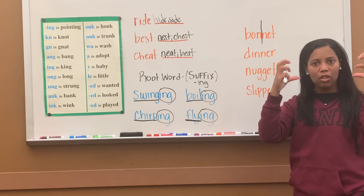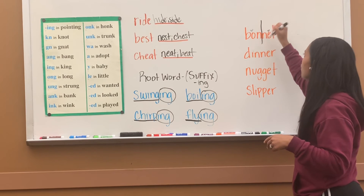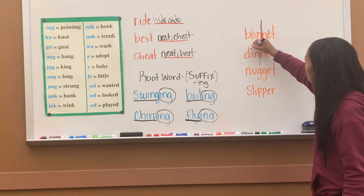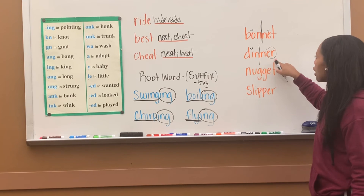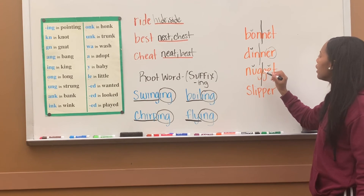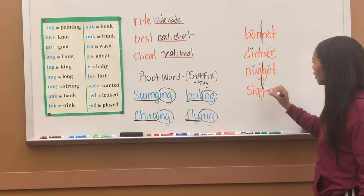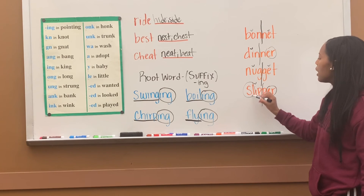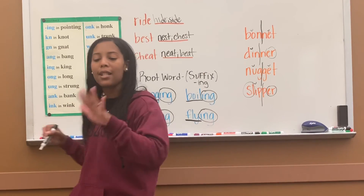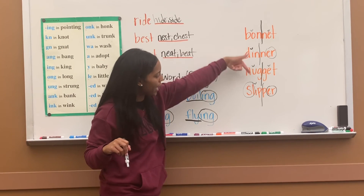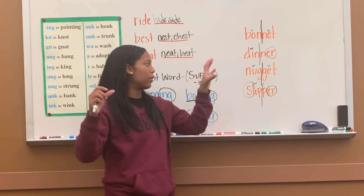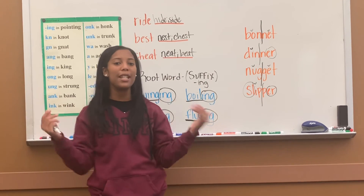So what you do is split between those same letters. Now we've broken it into two — two syllables — and we can read it easier. 'Bon-net' — bonnet. 'Din-ner' — dinner. 'Nug-get' — nugget. 'Slip-per' — slipper. That's one way we can divide syllables — by dividing between the double letters. Anytime you see double letters in a word and you're not sure, split between them, break down each side, mark the vowels, mark the special sounds, and it will help you read the word easier and faster.